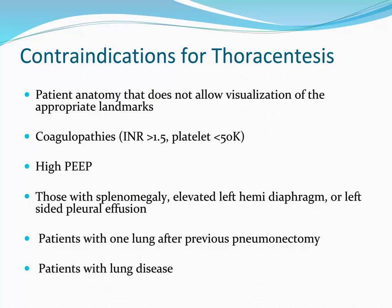Some of the absolute and relative contraindications include patient anatomy that makes it difficult to establish appropriate landmarks, coagulopathies, high PEEP, patients with splenomegaly, elevated left hemidiaphragm or left-sided pleural effusion, and patients with one lung after pneumonectomy or with significant lung disease. You can see where some of these contraindications are relative and need to be balanced with potential benefits. Many patients present with significant lung disease, develop pleural effusions that interfere with oxygenation and/or ventilation requiring BiPAP or impending intubation. Without the tap, they could open themselves up to further complications associated with mechanical ventilation.